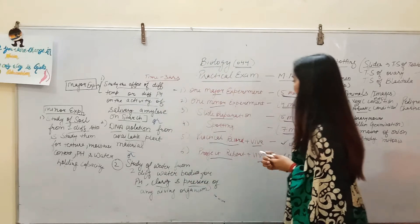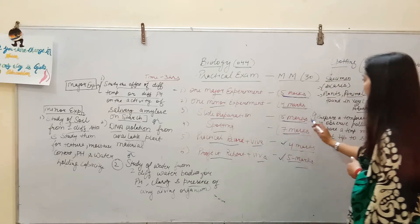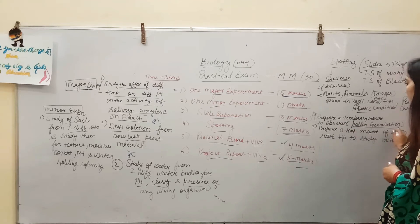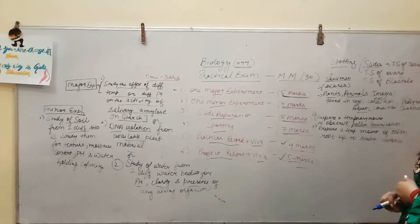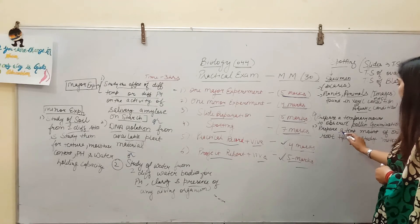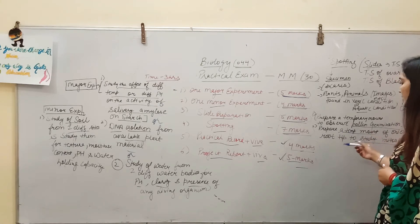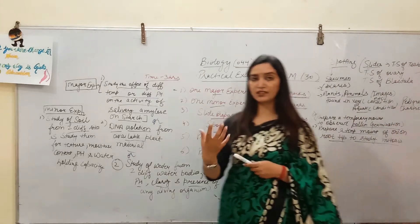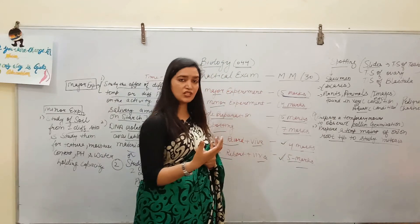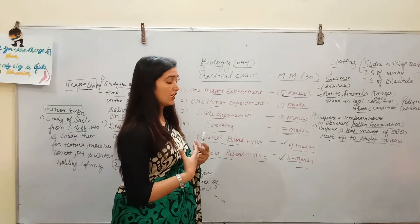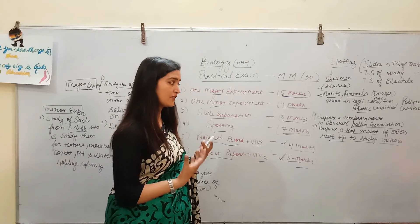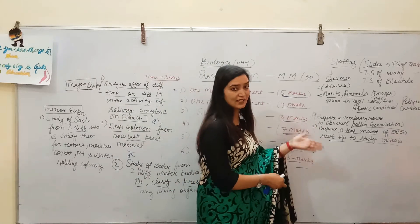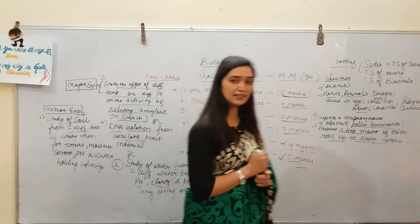For slide preparation, worth 5 marks, you may get either pollen germination — your teacher has already taught you how to make that slide — or you may have to make a temporary mount of onion root tip to study mitosis. You have to explain the different stages of mitosis: prophase, metaphase, anaphase, and telophase that you have observed under the microscope. Any one of these two will come.